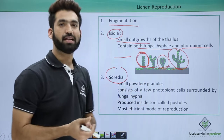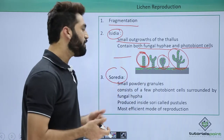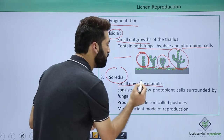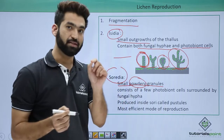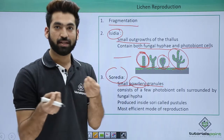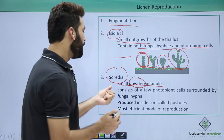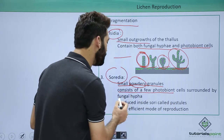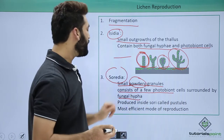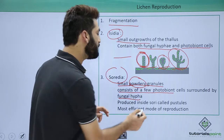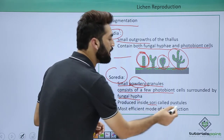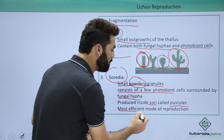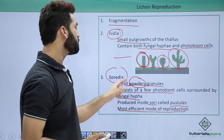Soridia are small powdery granules — they appear powdery because fungus always grows in cottony or powdery colonies. Soridia consist of a few phycobiont cells surrounded by fungal hyphae. They are produced inside structures called sorai, which are also called pustules, and this is the most efficient mode of reproduction in lichen.